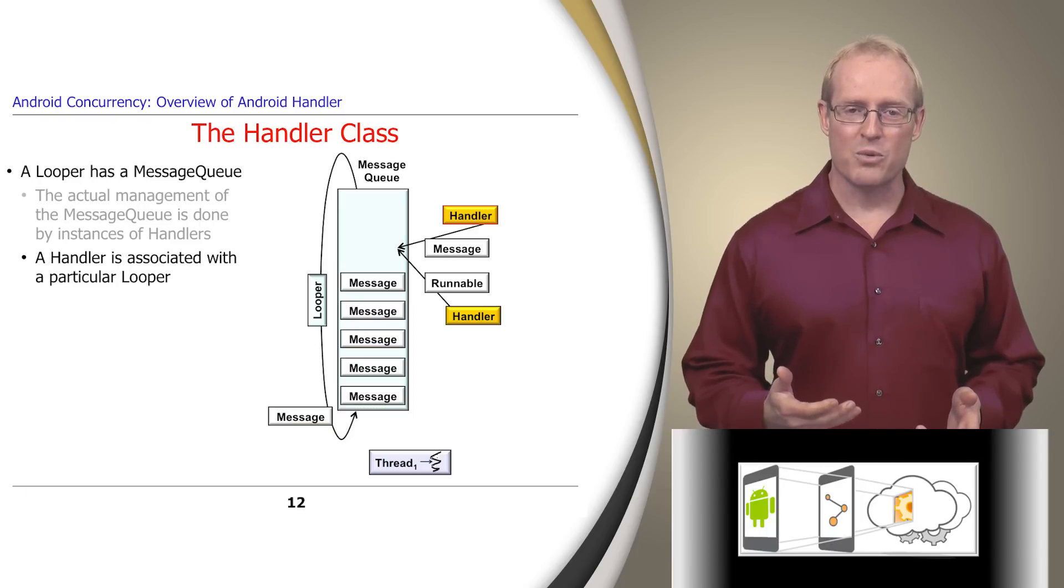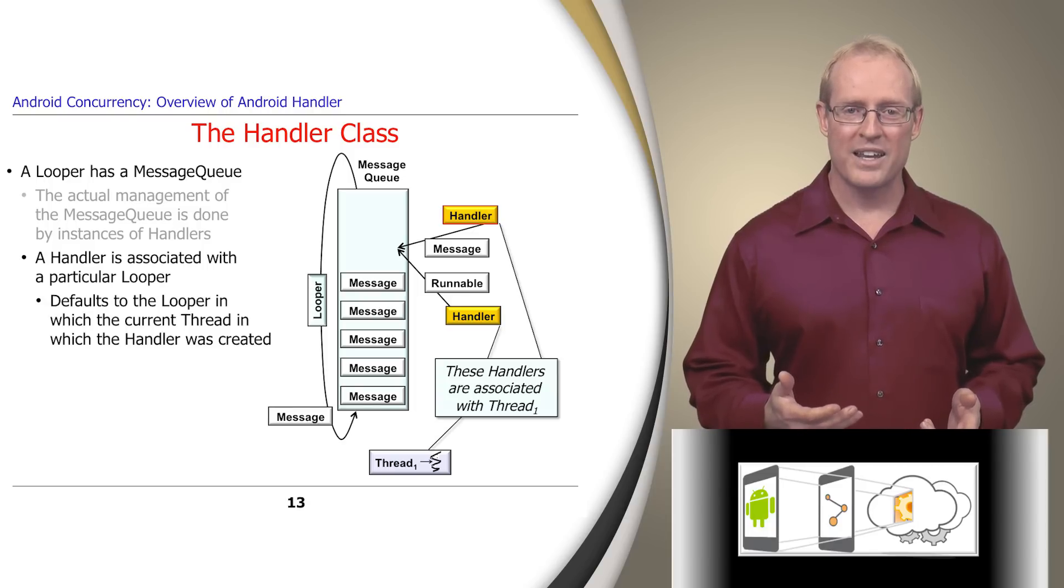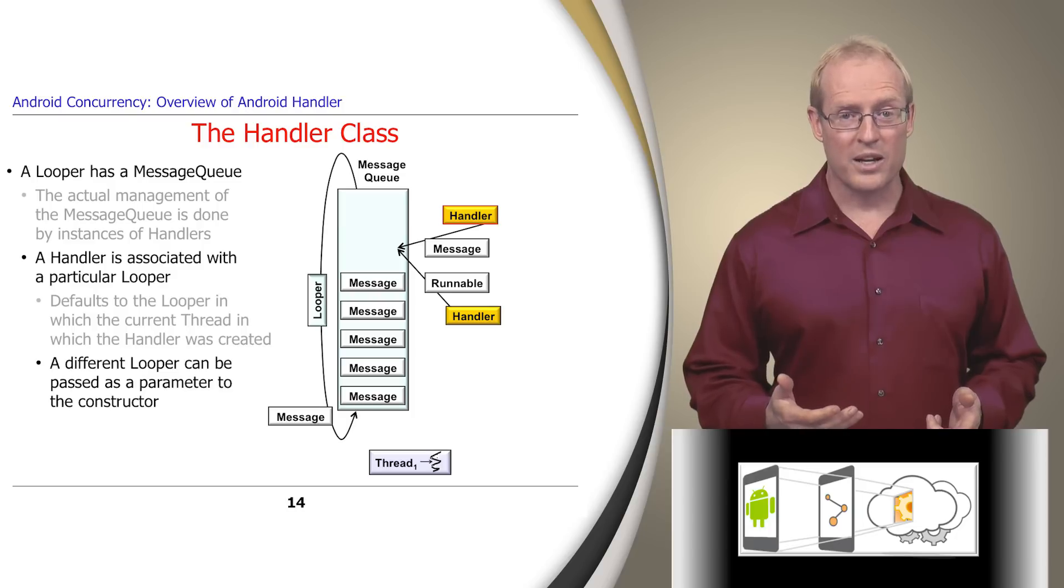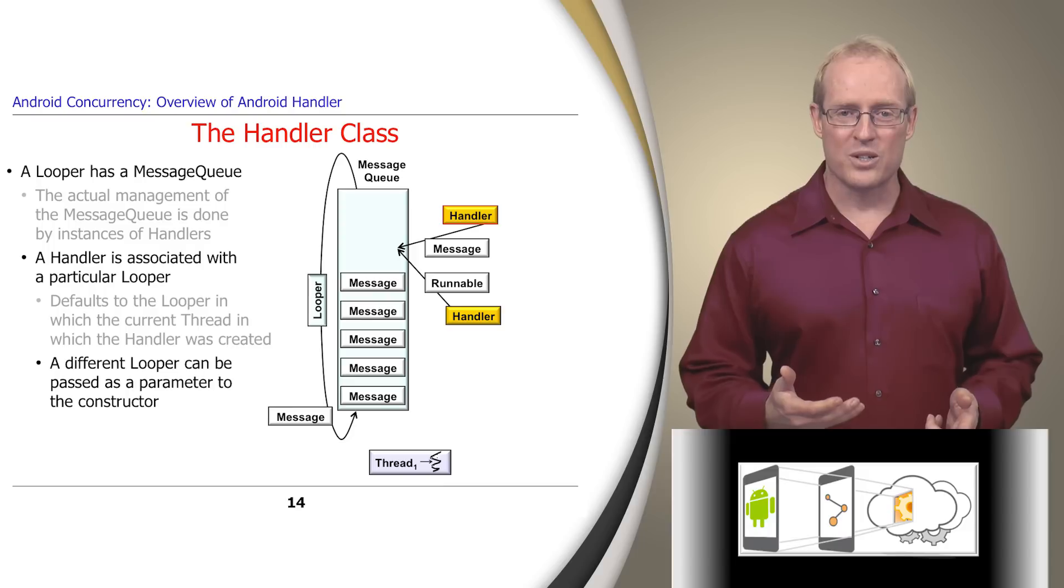A handler is associated with a particular looper, which defaults to the looper for the current thread in which the handler was created. Though a different looper can be passed as a parameter to the handler constructor, which stores it in a data member and uses it to control which thread manages operations on the handler.